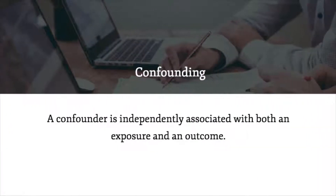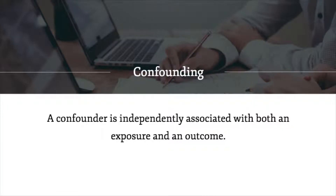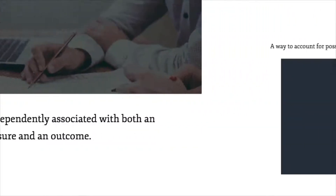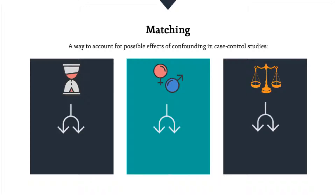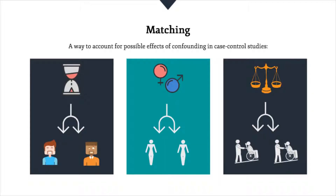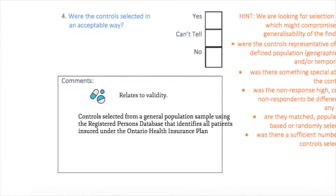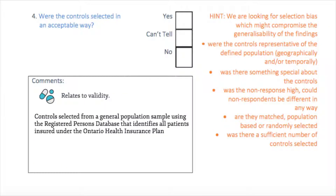Matching is another important point. Matching is a way to account for the possible effects of confounding in a case control study. Age, sex and socioeconomic status are common confounders, and we can account for their effects by matching cases and controls on factors such as these. So, if we have a case aged 35, we can match them with a control of the same or a similar age. In this study, cases were matched with controls on age, sex and socioeconomic status, which strengthens the robustness of this study's design.